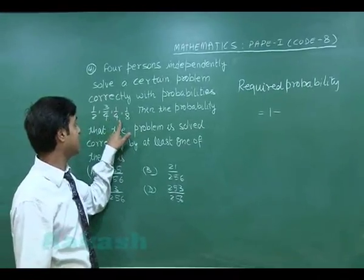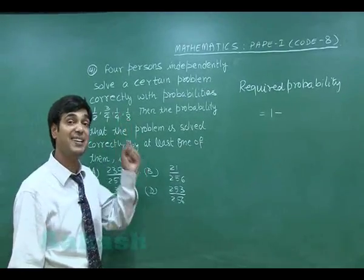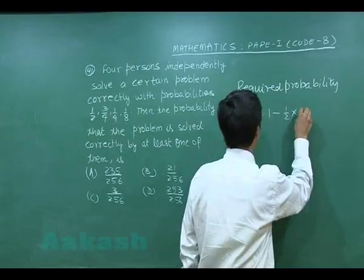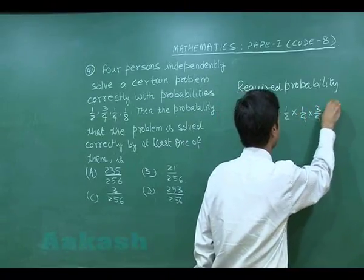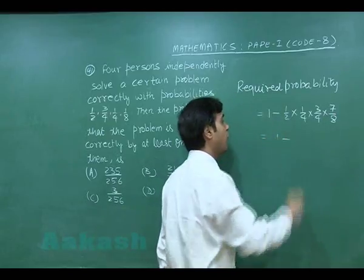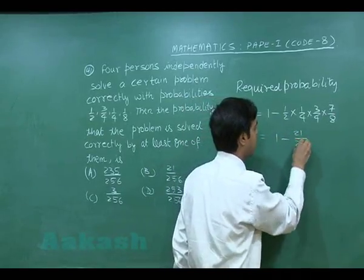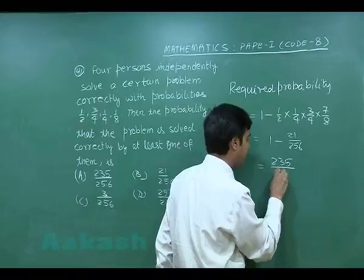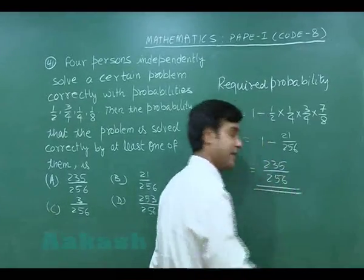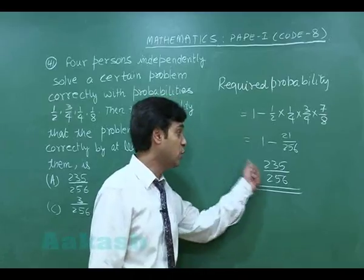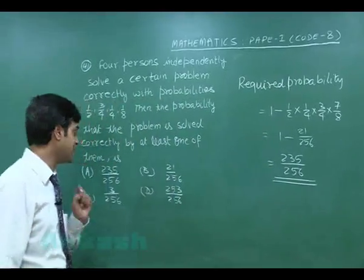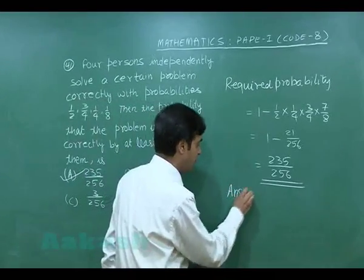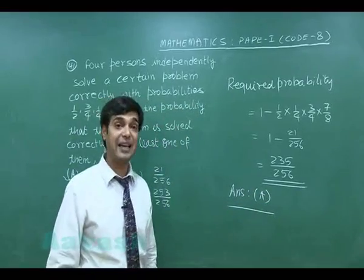So we get 1 minus: the first person didn't solve it (1 − 1/2), the second didn't solve it (1 − 3/4), the third (1 − 1/4), and the fourth (1 − 1/8). This gives us 1 minus (1/2 × 1/4 × 3/4 × 7/8), which is 1 − 21/256 = 235/256. This matches option A, so the correct answer is option A.